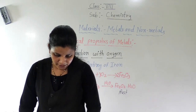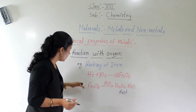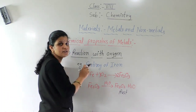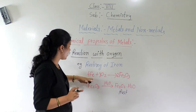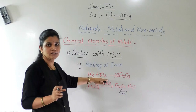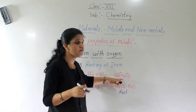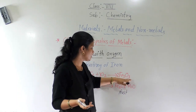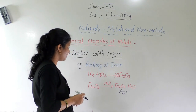How do we write this as a chemical reaction? Fe is the symbol of iron. When iron reacts with oxygen, it forms metal oxide — that is, iron oxide. Fe₂O₃ is iron oxide.